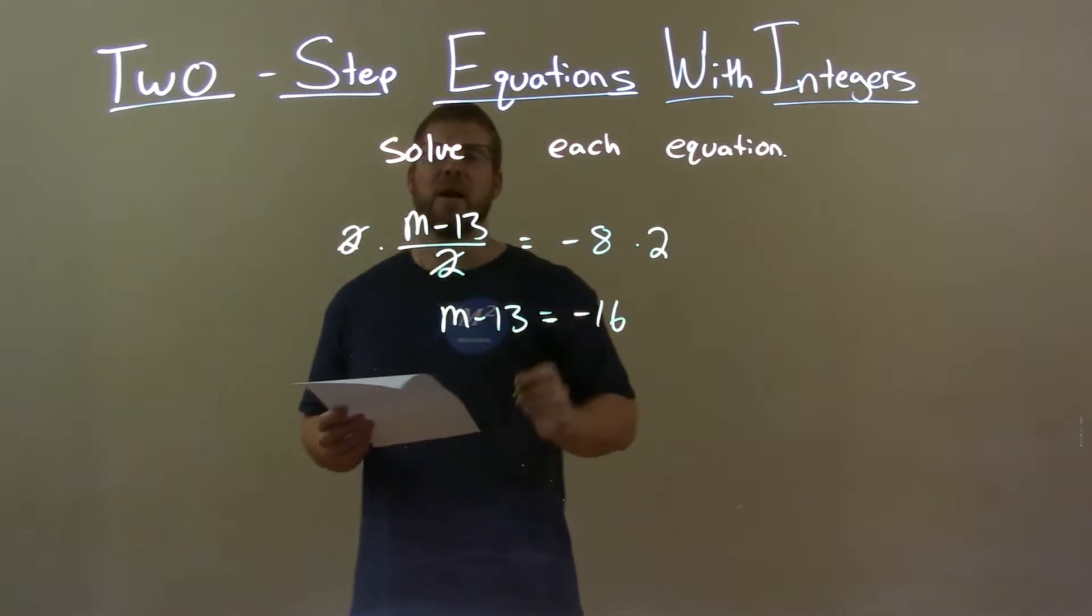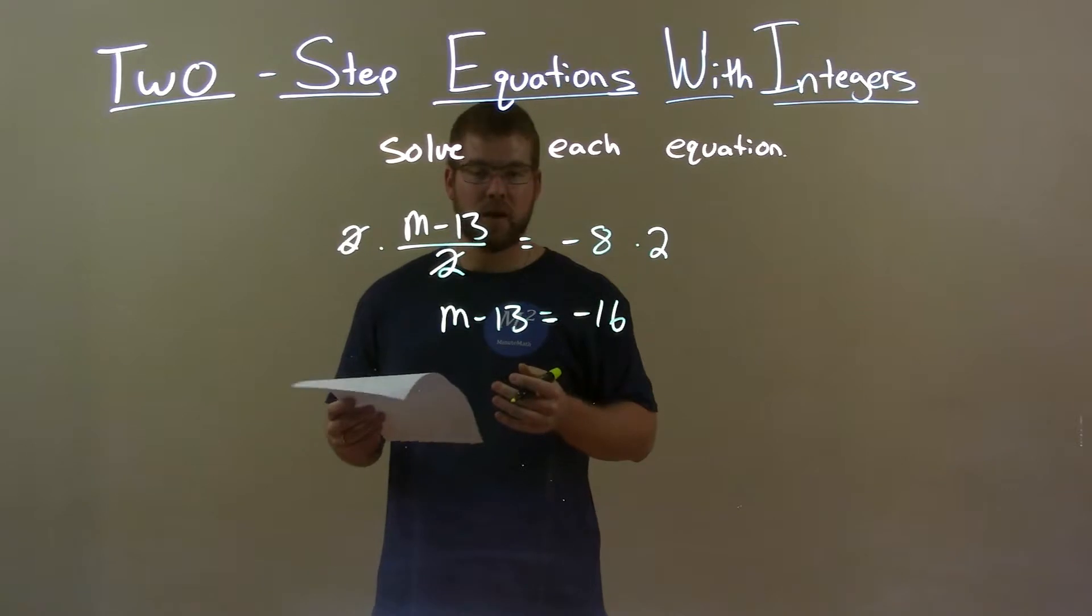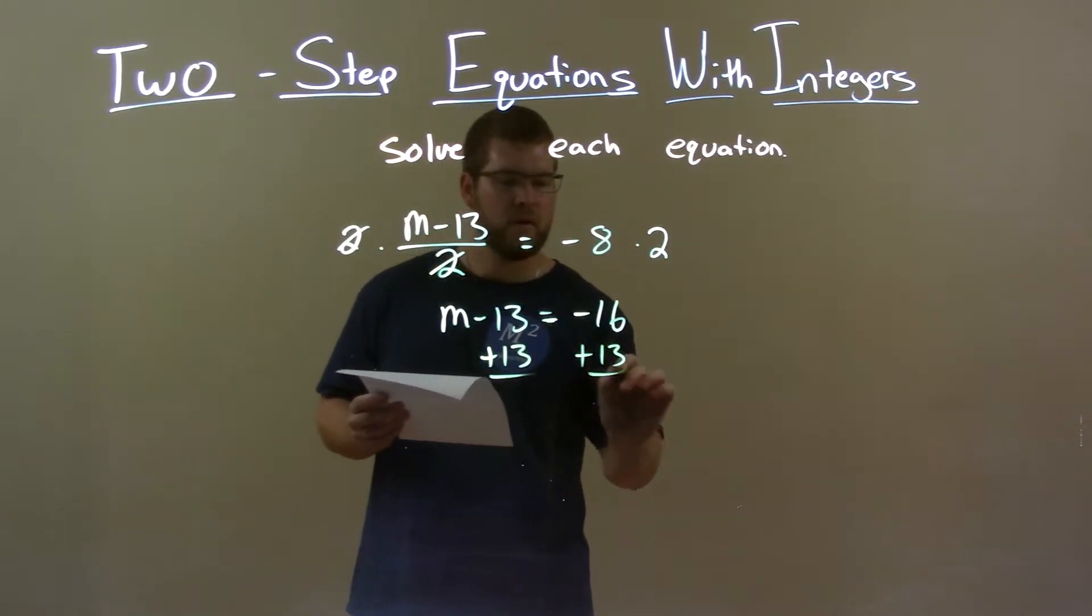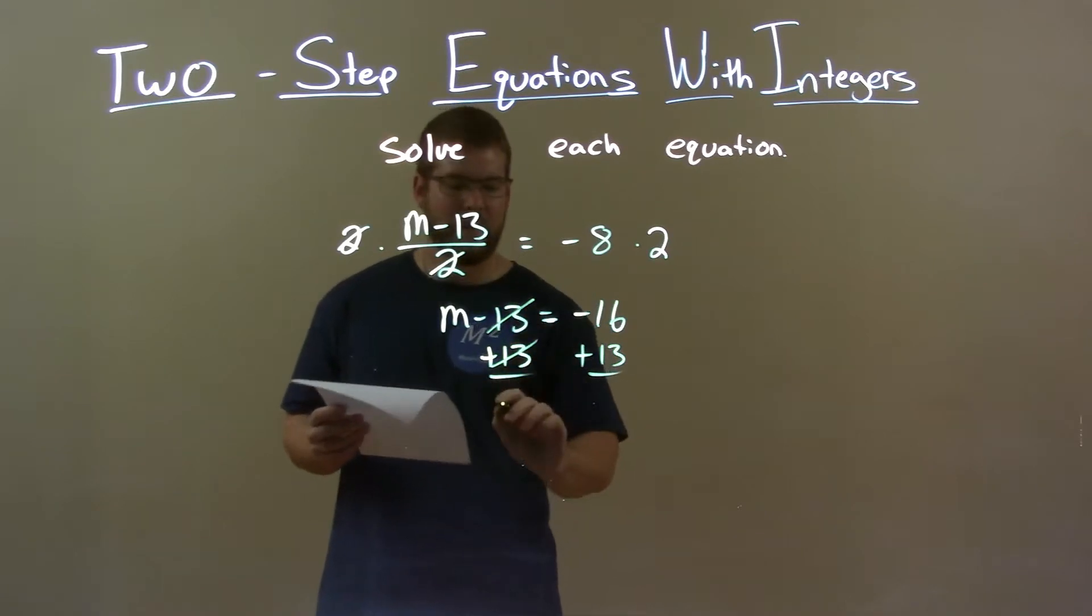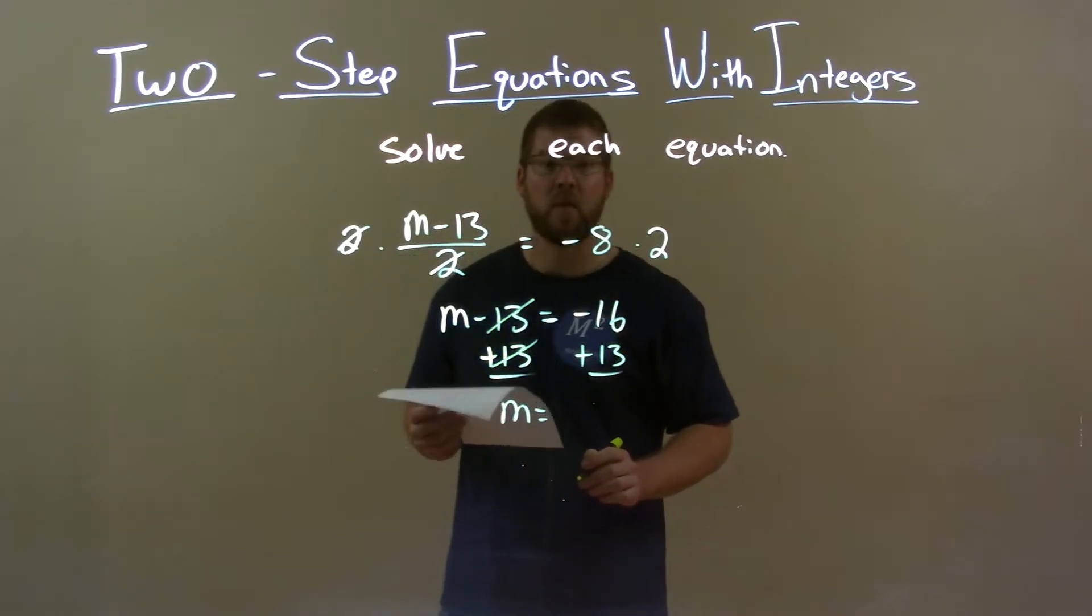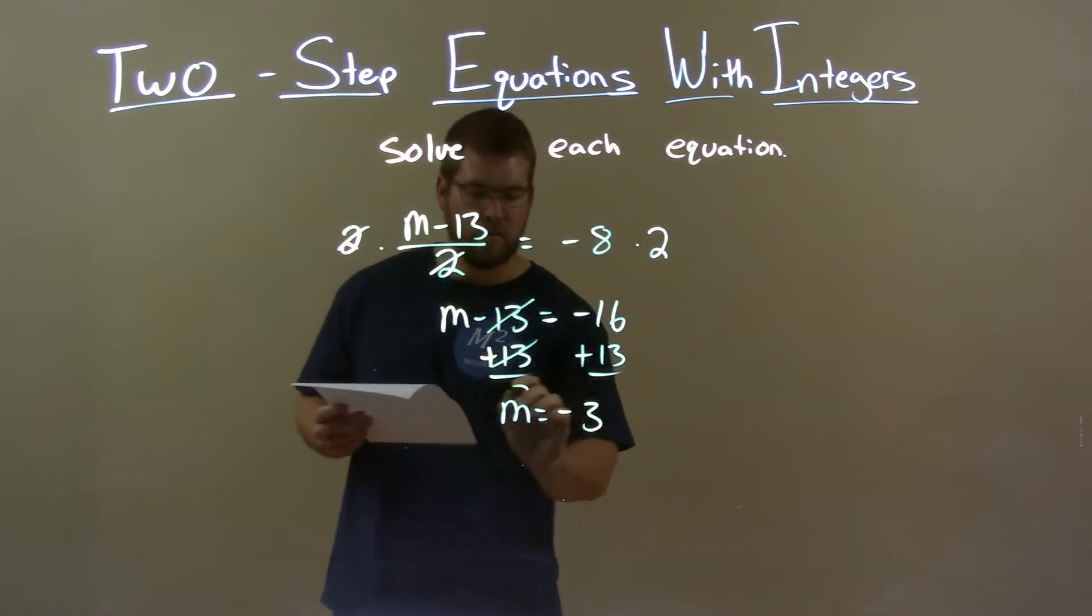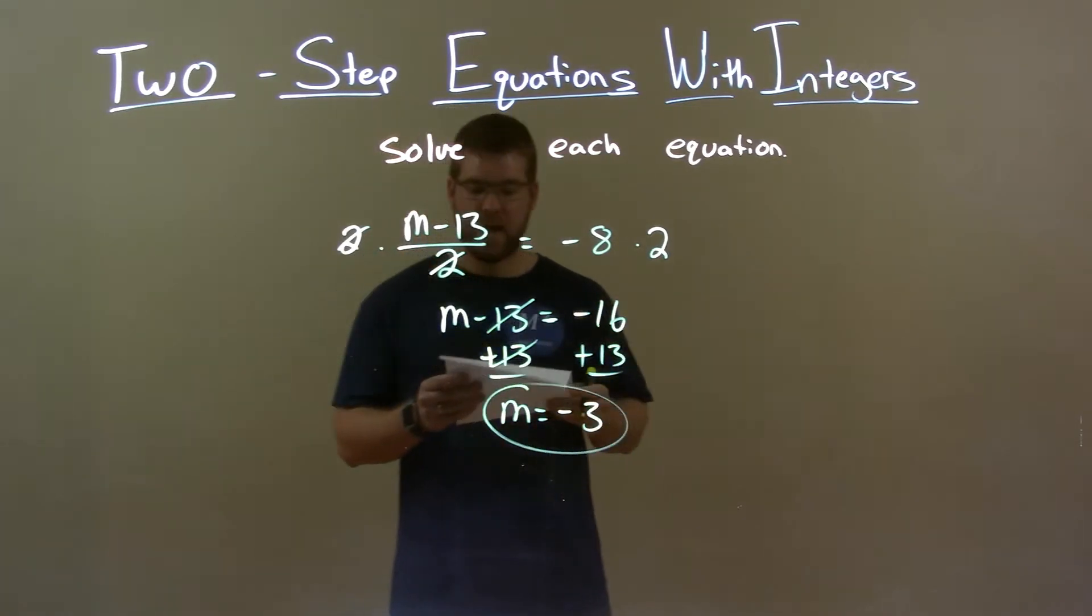Now we have m minus 13. Opposite of subtraction is addition. If I add 13 to both sides, the 13's on the left cancel, giving me m by itself on the left. On the right, negative 16 plus 13 is negative 3. So my final answer is m equals negative 3.